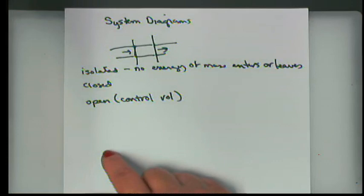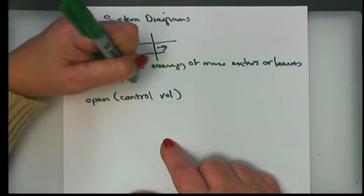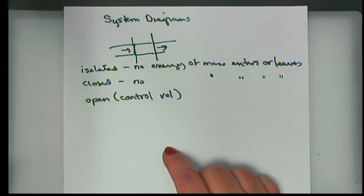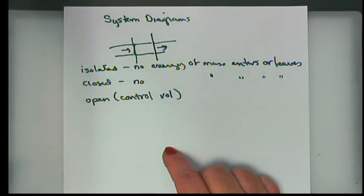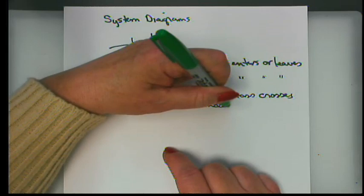An isolated system is like a perfect thermos — no energy or mass enters or leaves. A perfect thermos would keep your 110-degree coffee at exactly 110 degrees indefinitely. A closed system is like a real thermos: no mass enters or exits, but energy can transfer in or out, so it heats up or cools down over time.